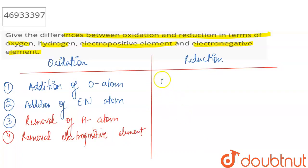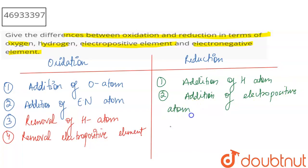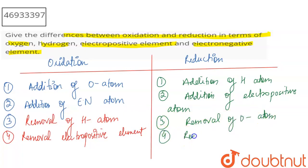Now I will talk about reduction. Addition of hydrogen atom is reduction. Addition of an electropositive atom is reduction. Removal of oxygen atom is reduction. And removal of an electronegative atom is also reduction.